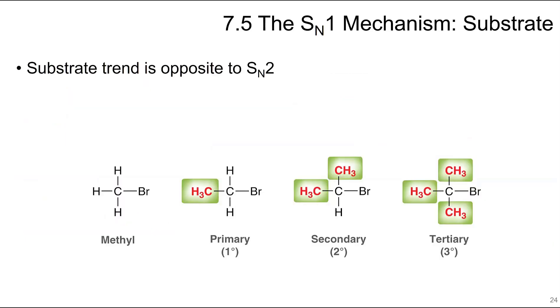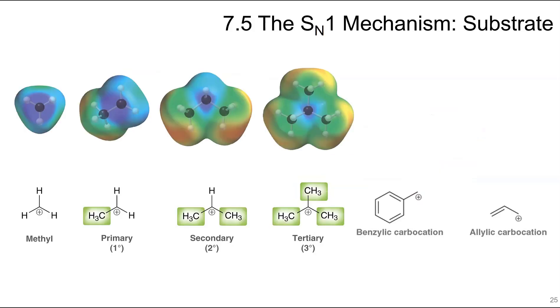Because of the mode of the mechanism, the substrate trend is opposite to SN2. So in an SN2 reaction, the methyl was the most reactive and the tertiary didn't happen. But for SN1, this is the most reactive. And this is the least reactive.